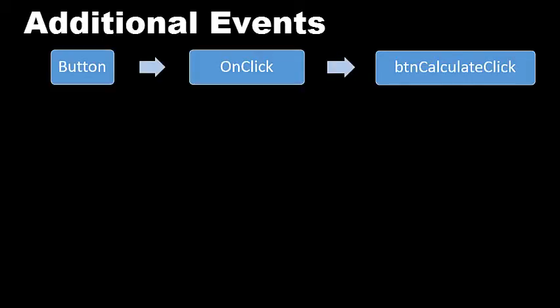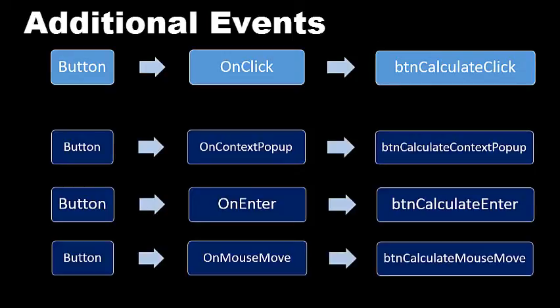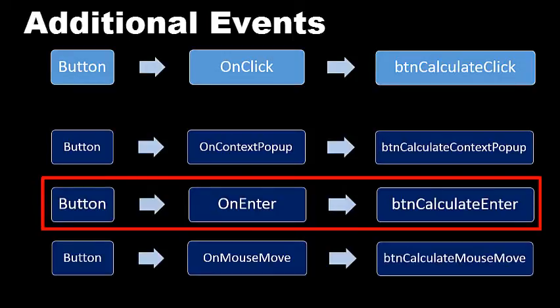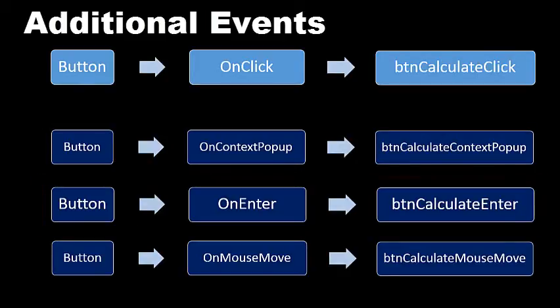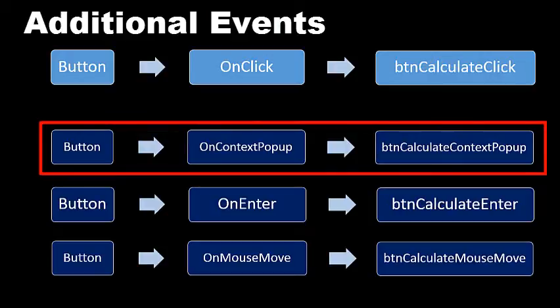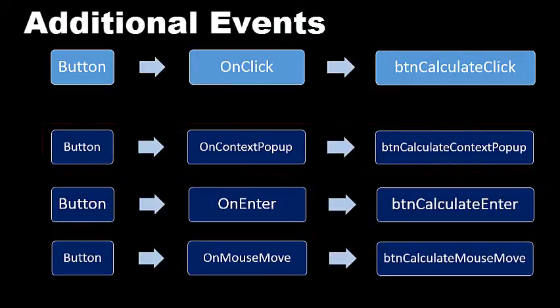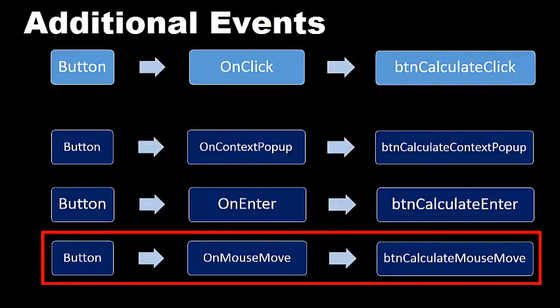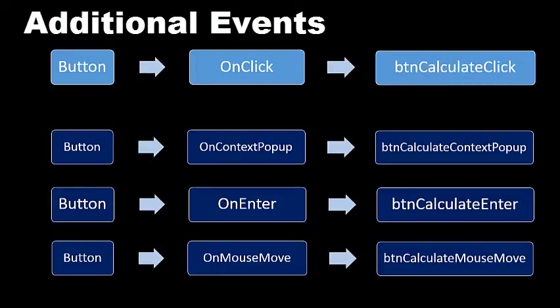BTN Calculate can also trigger additional events in response to user actions. For example, a user can shift focus to BTN Calculate, triggering its onEnter event, which links to an event handler called BTNCalculateEnter. The user can also right click on BTN Calculate, triggering the onContextPopup event, which links to BTNCalculateContextPopup. The user can also move the mouse pointer over BTN Calculate's surface, triggering the onMouseMove event, which links to BTNCalculateMouseMove. These are just some of the additional events that can be invoked for a button — you can explore more.